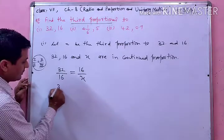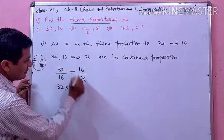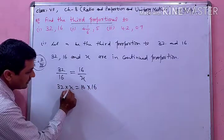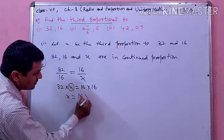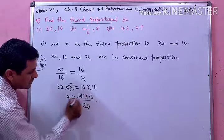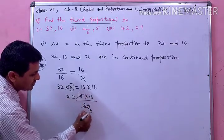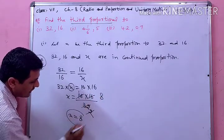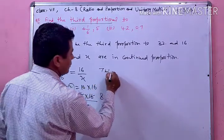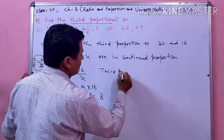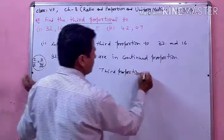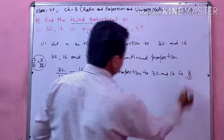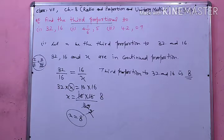Now this is continued proportion. We can multiply — 16 multiplied by 16, divided by 32, gives us 8. So the third proportional to 32 and 16 is 8. इस तरह से हमारा यह जो first part है वो complete हो चुका है।